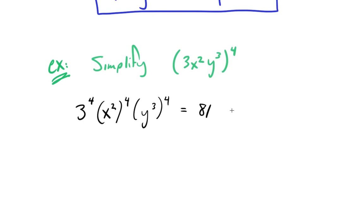x squared to the 4th - the rules of exponents say that when you have an exponent raised to another exponent, you multiply those two exponents together to get the new exponent. Similarly, that's what's going to happen with y.